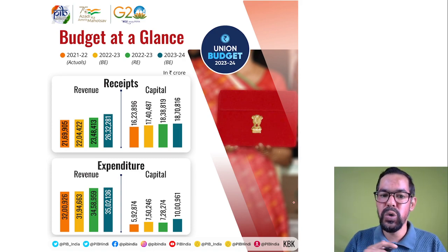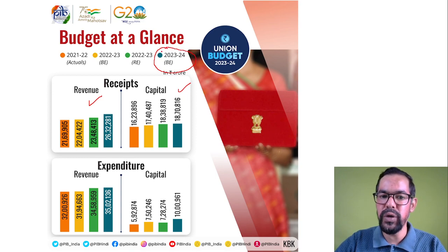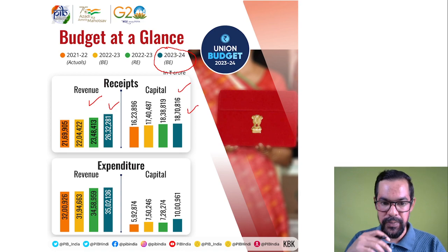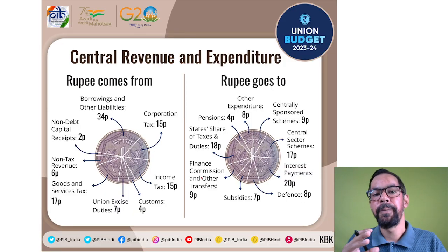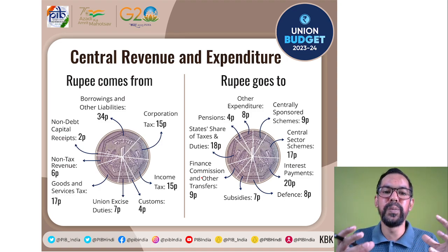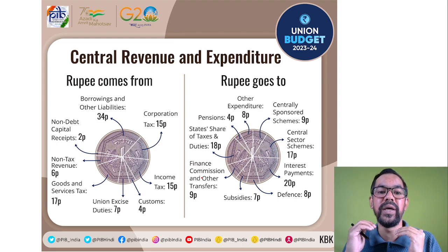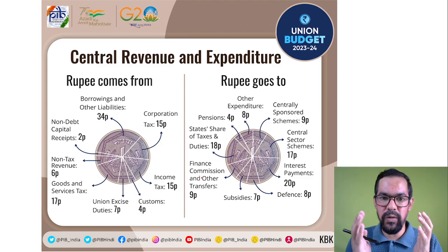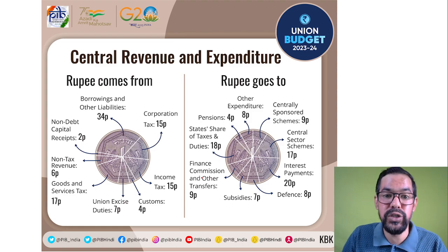On the receipt side for 2023-24, budget estimation for revenue receipts is 26.32 lakh crore rupees and through borrowings it is 18.70 lakh crore rupees. On the expenditure side, revenue expenditure is 35.20 lakh crore rupees and capital expenditure is 10 lakh crore rupees. So from where does the government generate this 45 lakh crore rupees? What are the major sources of income?